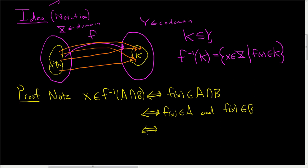And this is equivalent to, well, if F of X is in A, that means X is in the inverse image of A. And if F of X is in B, that means X is in the inverse image of B. So we have X in the inverse image of A and X in the inverse image of B.